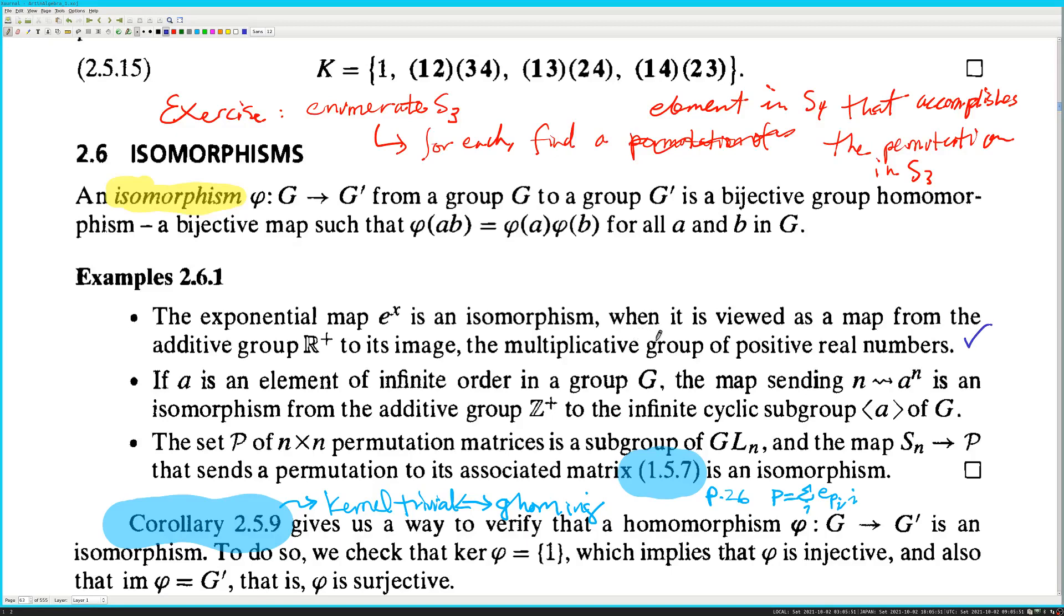It's a bijective map, so a one-to-one mapping, which is different from a mapping that is one-to-one because the Glowies dominate math, such that phi of AB is equal to phi of A, phi of B for all AB and G. The exponential map E to X is an isomorphism when it is viewed as a map from the additive group R plus to its image, the multiplicative group of positive real numbers. That's correct. If A is an element of infinite order in a group G, the map sending N to AN is an isomorphism from the additive group Z plus to the infinite cyclic subgroup. Yes.